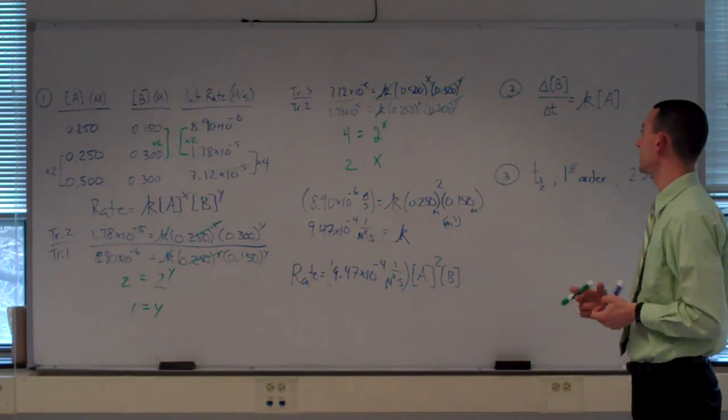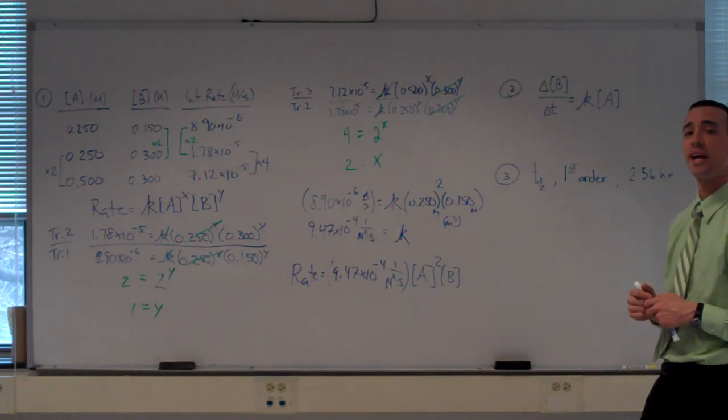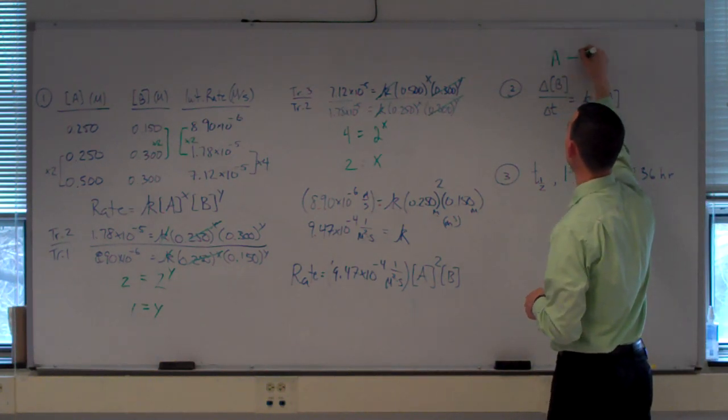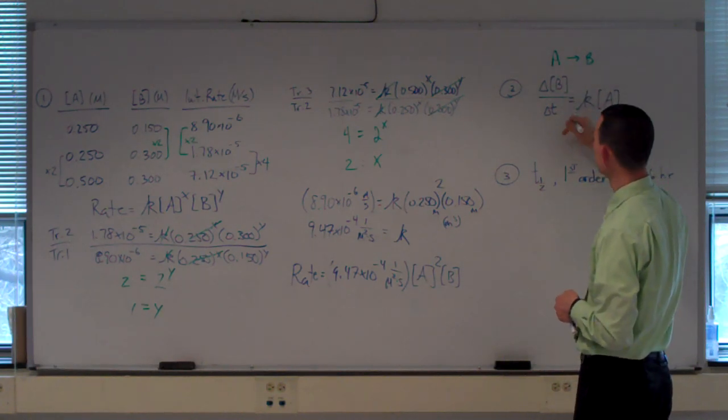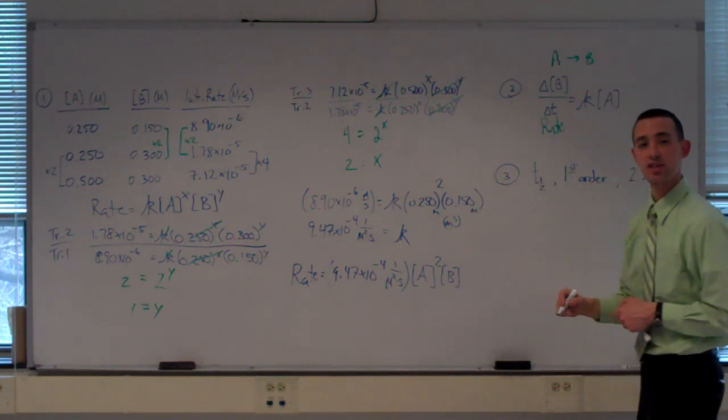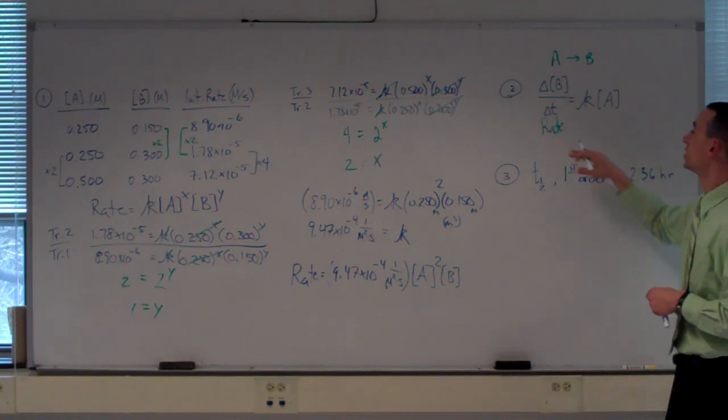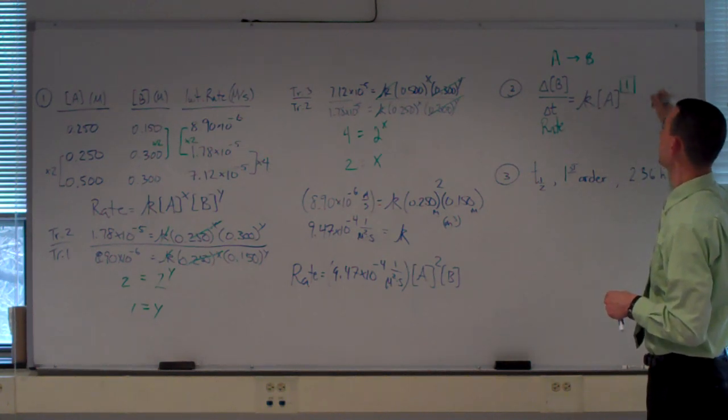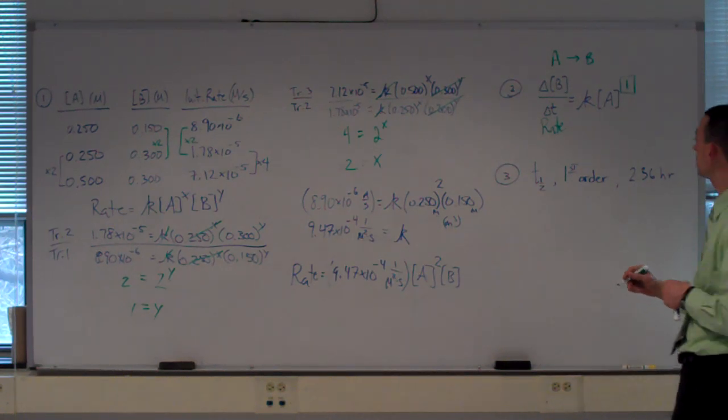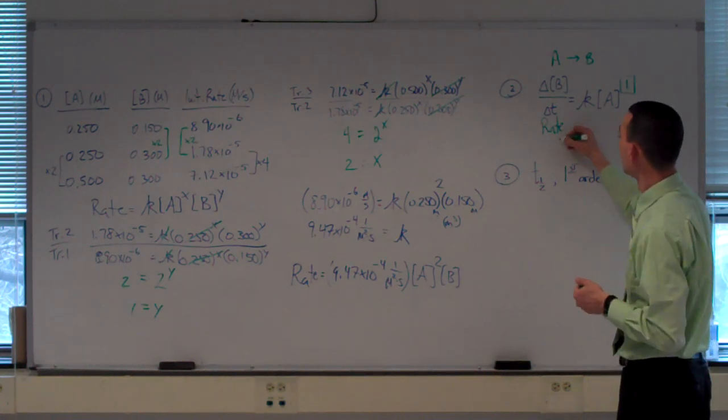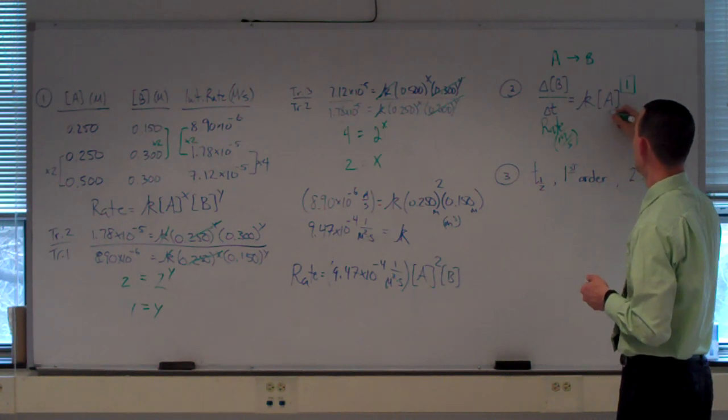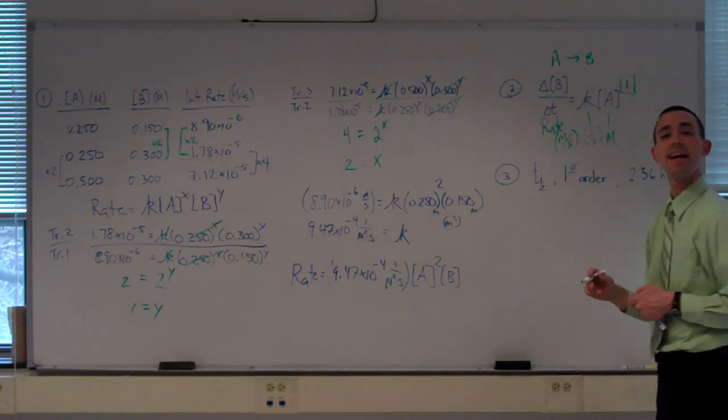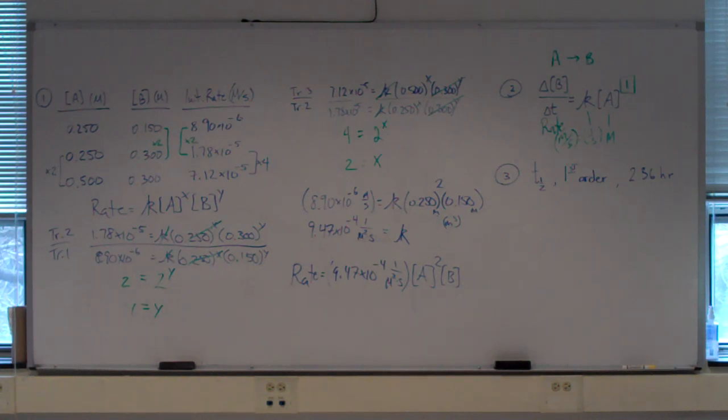Our second question asks us to identify the units of the rate constant given this rate law. The trick here is recognizing that this delta B over delta T, that would be the rate of this reaction, the way we express the average rate of the reaction. So we're saying the rate of this reaction is equal to K times A, and it's not written up here, but that means this is a first order reaction. Rate units are always molarity per time, concentration's always molarity, that means that the K must provide the one over time. So the units of K are one over seconds for a first order reaction.